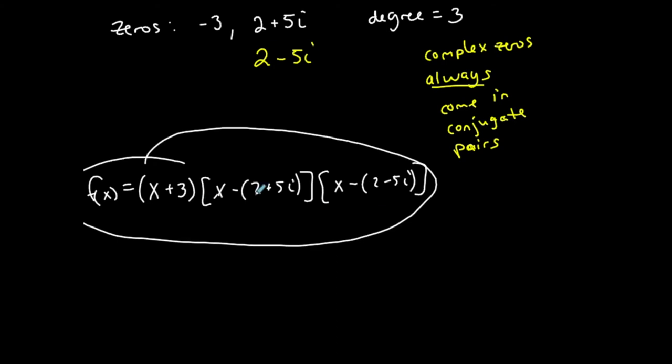So based on the zeros I got my three factors, but this is the factored form of the function. If I want it in polynomial form, I have to multiply this out. What I'm going to multiply out first are these two complex factors. Let me start there.